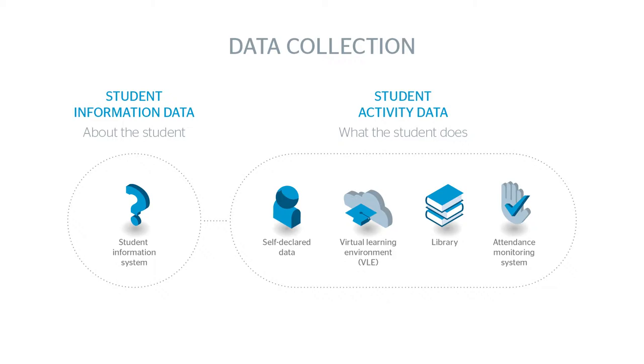All data collected into the learning records warehouse continues to be owned by the institution and not by anybody else without their permission to access and use it. There are two types of data collected: firstly, student information — individual learner grades, modules, and courses they're taking, which is relatively static. The second type is learner activity data — the digital footprint generated every time they use a system, click on a web link, or attend a lecture — which collects their activity data from any number of sources.